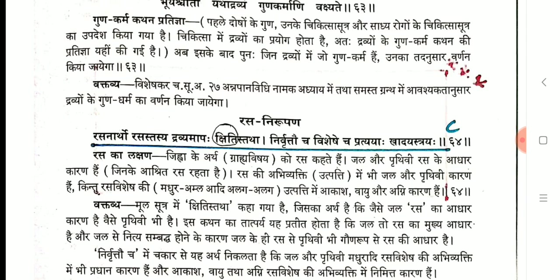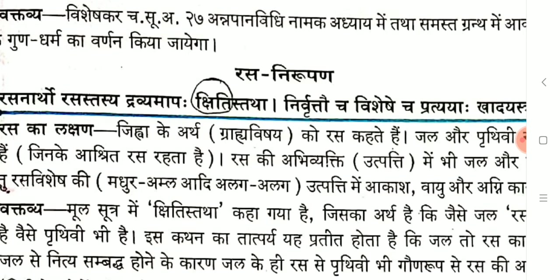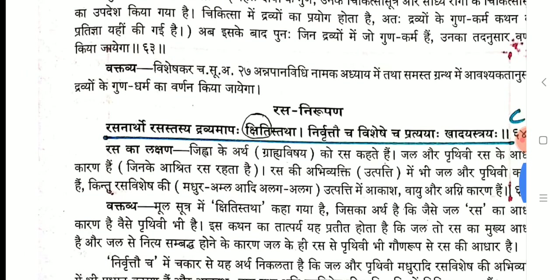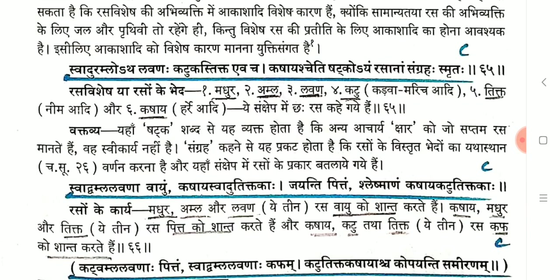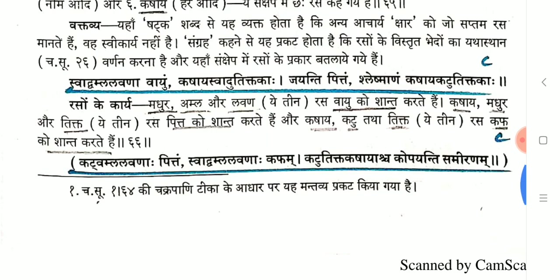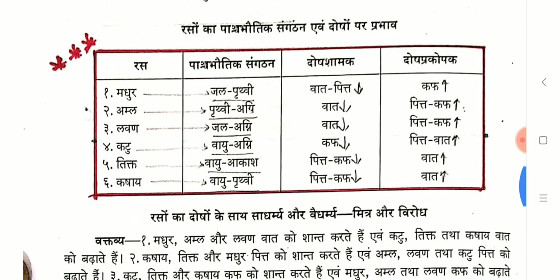Rasalakshana: 'Rasanatho rasa tasya dravyam apah kshiti statha.' Rasana has the Adishthana of two Mahabhutas. The word 'ap' and 'kshiti' — kshiti means Prithvi Mahabhuta. Prithvi and Ap together form the Mahabhuta component of Rasana or Rasa. There are six Rasas: Madhura, Amla, Lavana, Katu, Tikta and Kashaya. Remember the order and names. Their Pancha Mahabhuta sangatana, Dosha shamakita and Dosha prakopakita are important from our first BAMS.